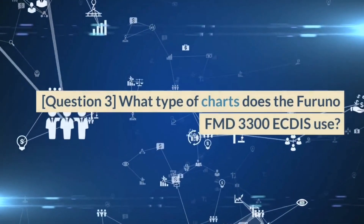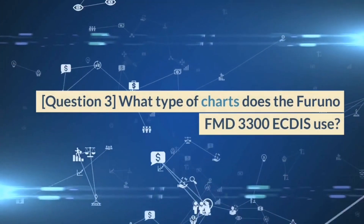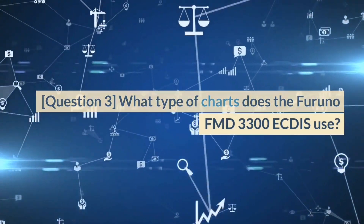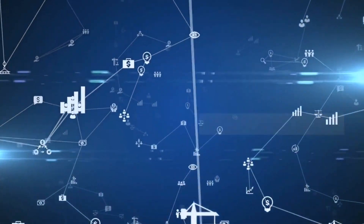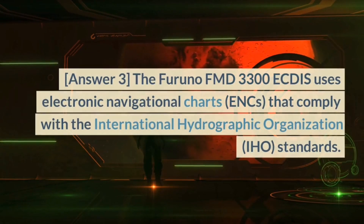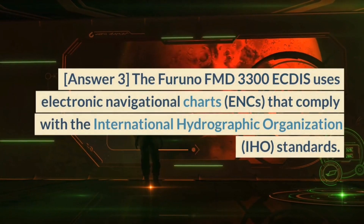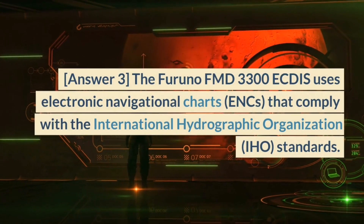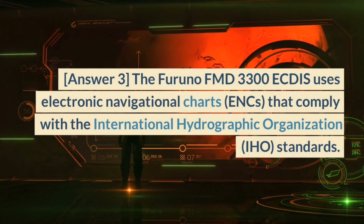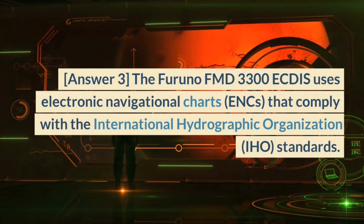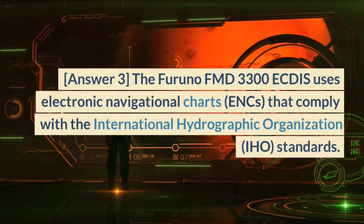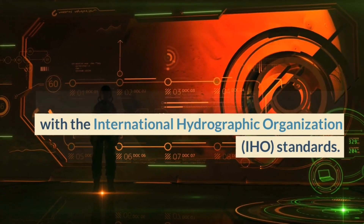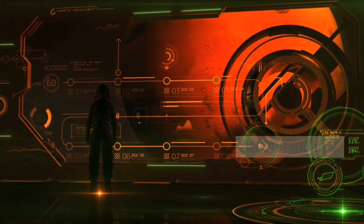Question 3. What type of charts does the Furuno FMD 3300 ECDIS use? Answer 3. The Furuno FMD 3300 ECDIS uses Electronic Navigational Charts, ENCs, that comply with the International Hydrographic Organization, IHO, standards.